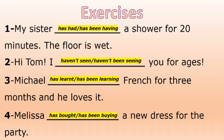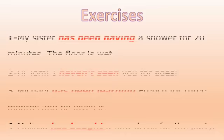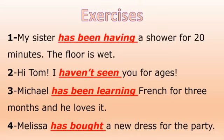Okay, let's check the correct answers. Number one: 'My sister has been having a shower for 20 minutes' — it's present perfect continuous because it started in the past and it is still happening, because the floor is wet — 'floor is wet' is present tense, still relevant. Number two: 'Hi Tom, I haven't seen you for ages' — it happened in the past but it is stopped, that's why we use present perfect simple.